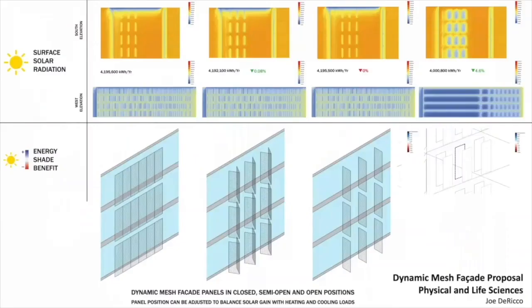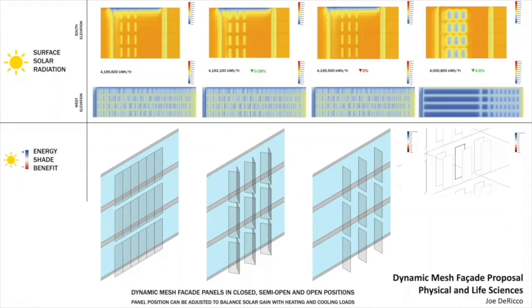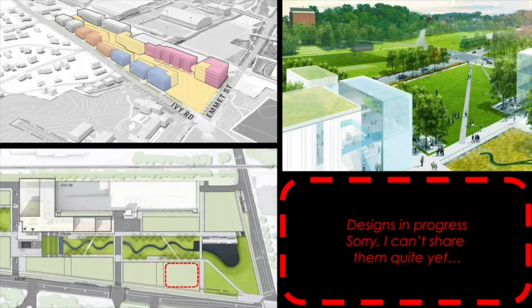The ones that already exist — in this case looking at Rice Hall, that building by Bohlin Cywinski Jackson, or here looking at physical and life sciences — looking at solar radiation and energy shade benefit, and a proposal then for how a dynamic mesh facade might start to understand this and begin to actuate upon this idea in a better way than what it might even currently be doing.